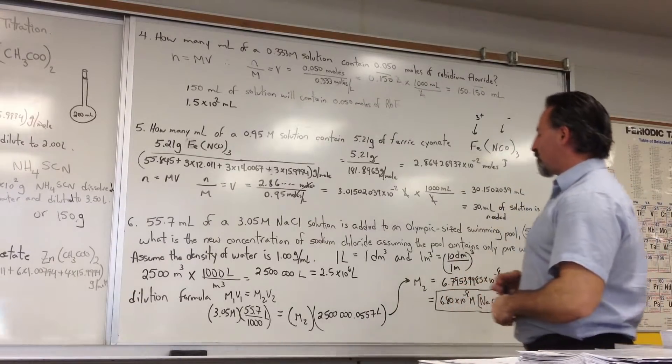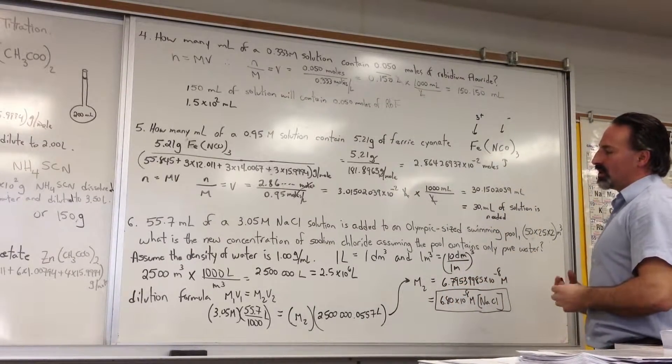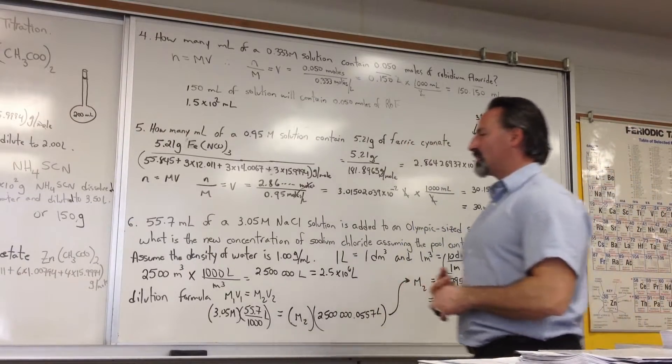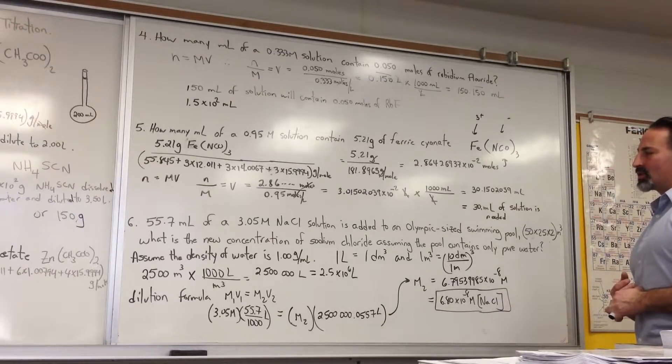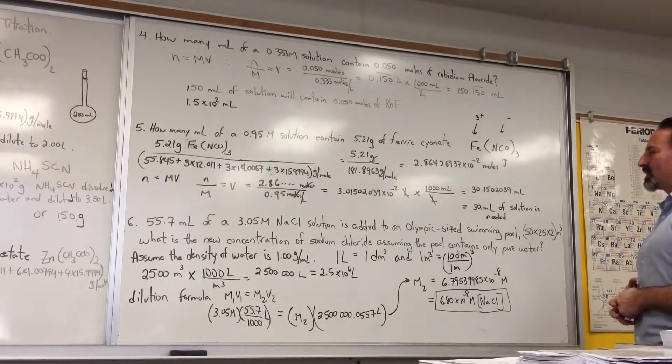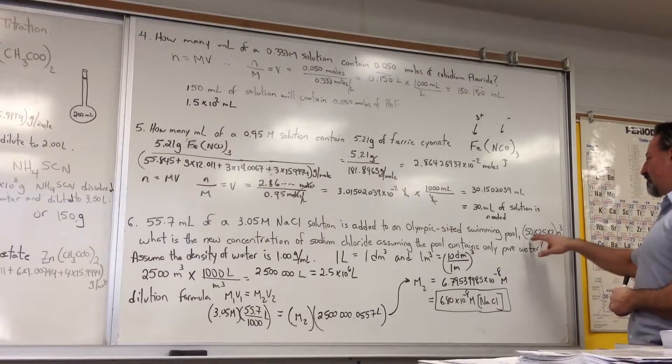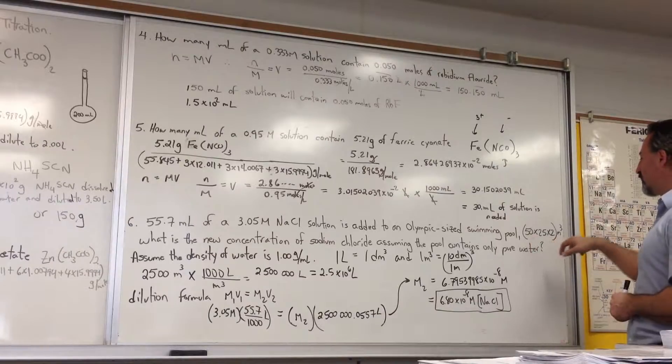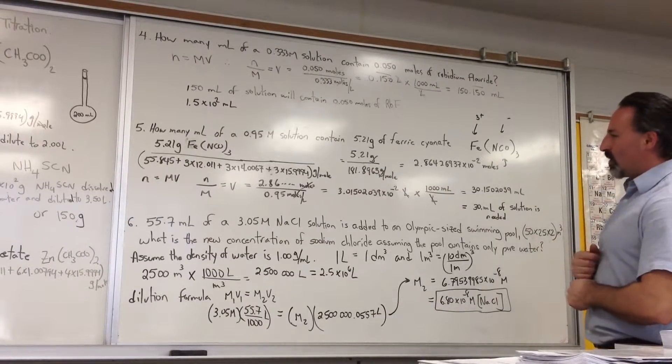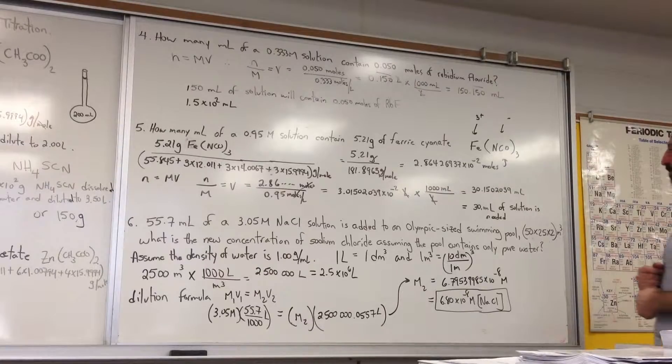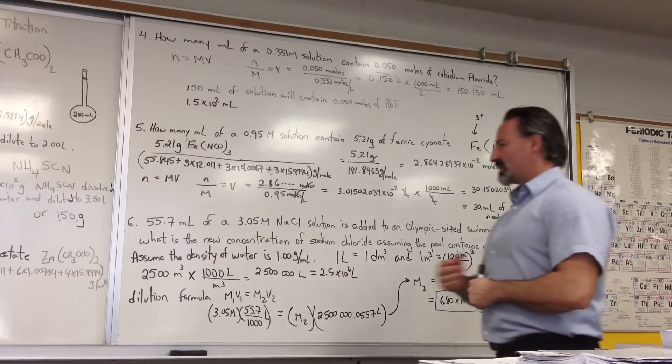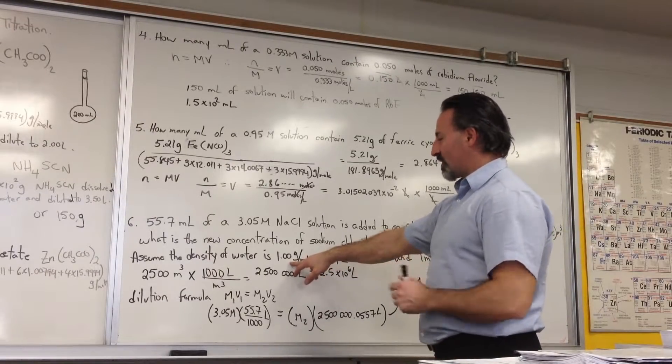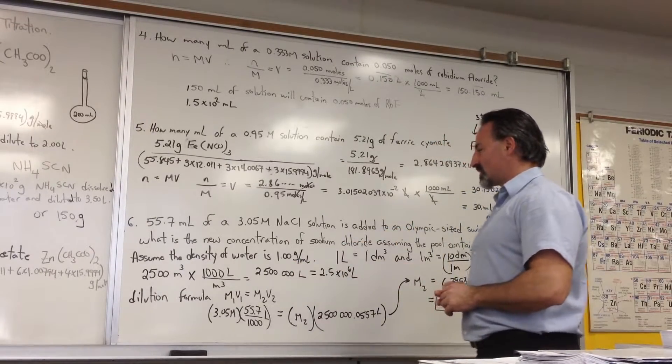The last question is a bit more challenging because it involves a unit conversion, and it's a dilution question. It asks, 55.7 ml of a 3.5 molar sodium chloride solution is added to an Olympic-sized swimming pool with dimensions 50 by 25 by 2 meters. So it's 2 meters deep, 25 wide, 50 long. What is the new concentration of sodium chloride? Assume the pool contains only pure water. Assume the density of water is 1.0 grams per milliliter, which would be true if the water temperature was around 4 degrees Celsius. That's where water achieves its highest density.